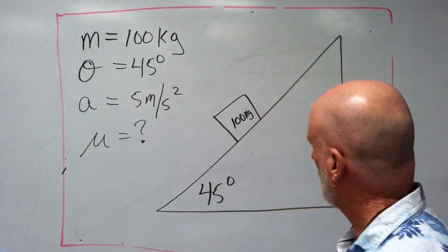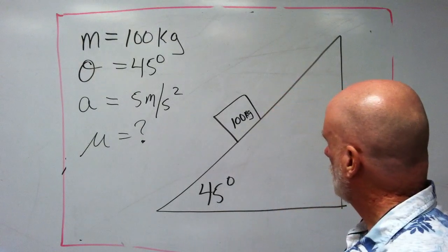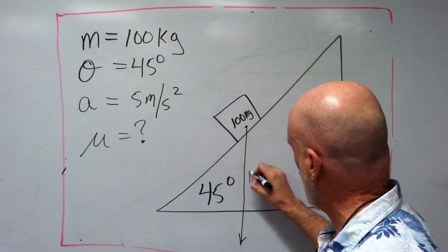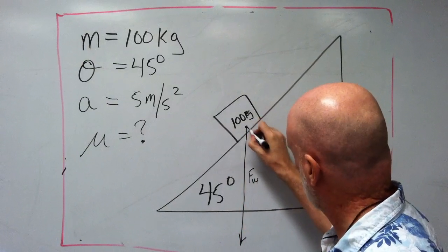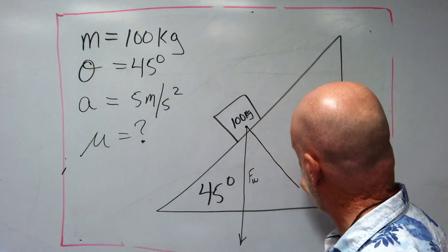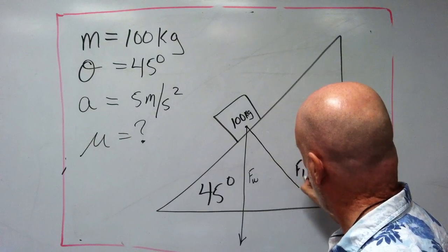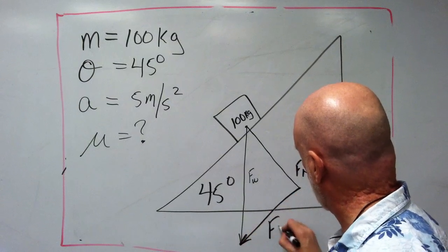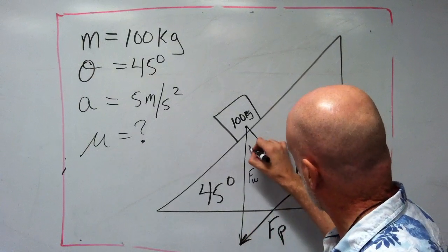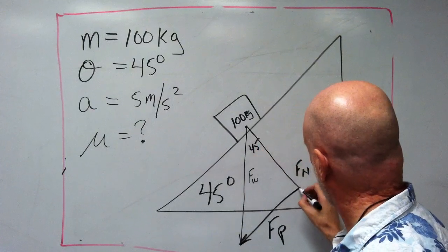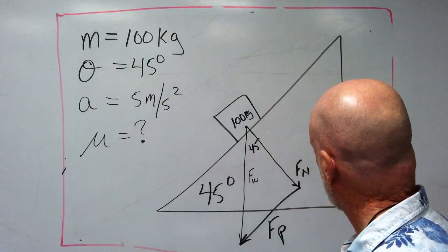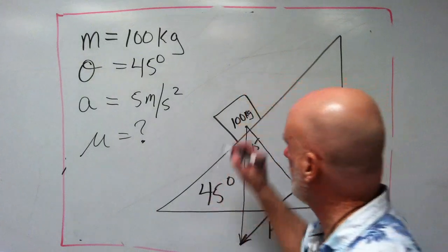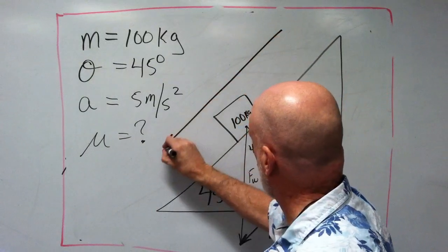Okay, what's mu? Now, so we know that that's Fw. That's Fn. That's Fp. That's 45.